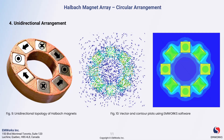This arrangement minimizes magnetic field distortion and ensures that the magnetic forces are directed precisely where needed, enhancing performance and efficiency. Moreover, the use of upward and downward magnetization allows for versatile applications, enabling designers to fine-tune the magnetic properties according to specific needs.